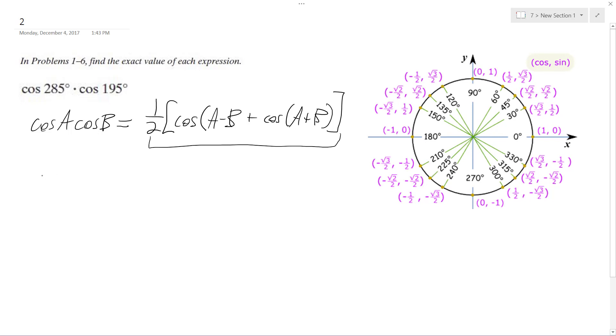So in this instance we're going to have one half, so cosine of A minus B, which ends up being 285 minus 195, which is 90 degrees,